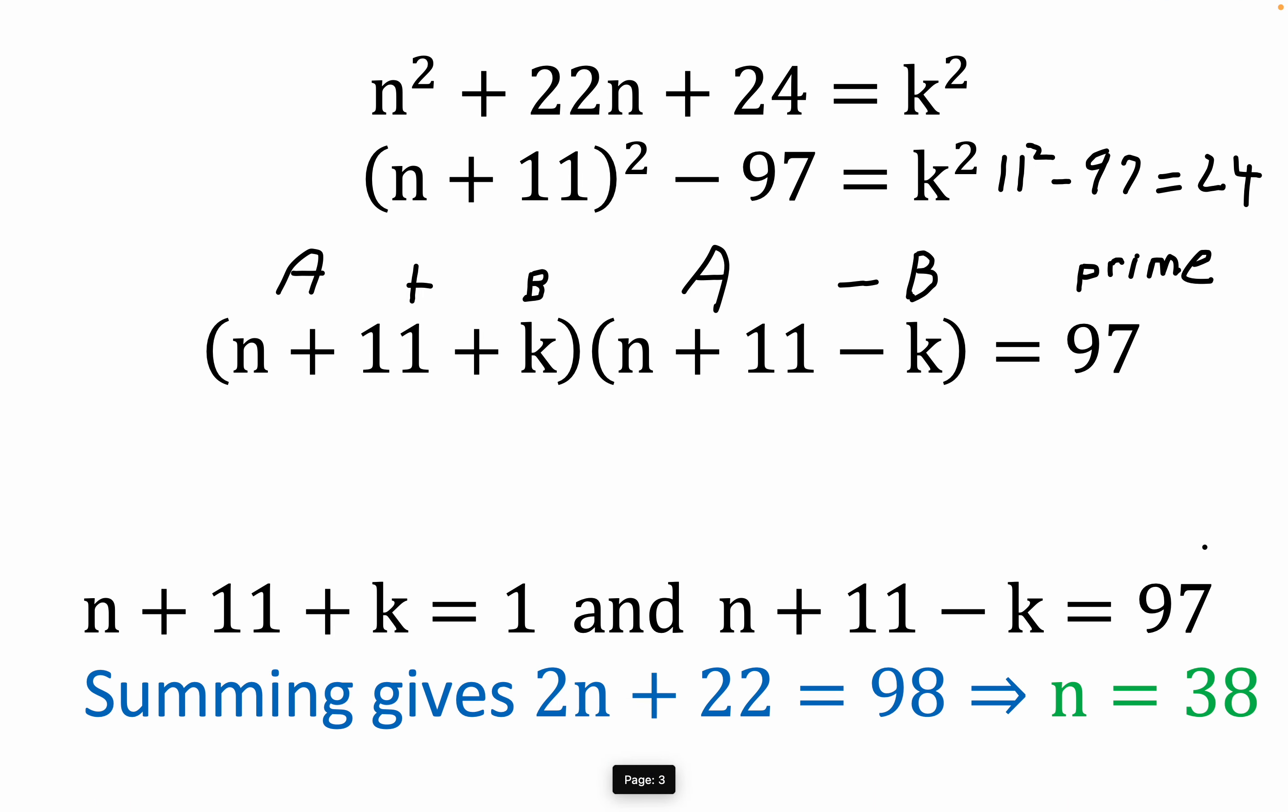So what that does is lead to a very favorable circumstance in terms of calculations. You can call this first factor one and this second factor 97. The order is not important because all we're going to do is sum these guys. You could put the 97 here and the one here. I just arbitrarily put the one here and the 97 here.